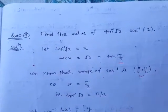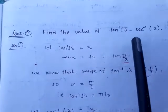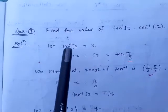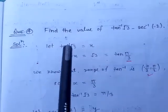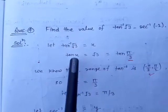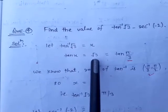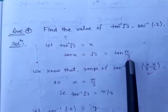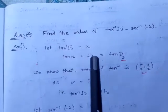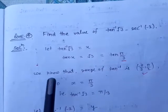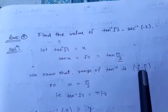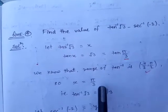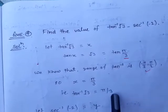Next question: find the value of tan⁻¹(√3) − sec⁻¹(−2). Solving separately — let tan⁻¹(√3) = x, so tan x = √3. We know tan(π/3) = √3, so tan x = tan(π/3). Checking the range of tan inverse, which is (−π/2, π/2), π/3 belongs to this range. Therefore x = π/3, that is tan⁻¹(√3) = π/3.